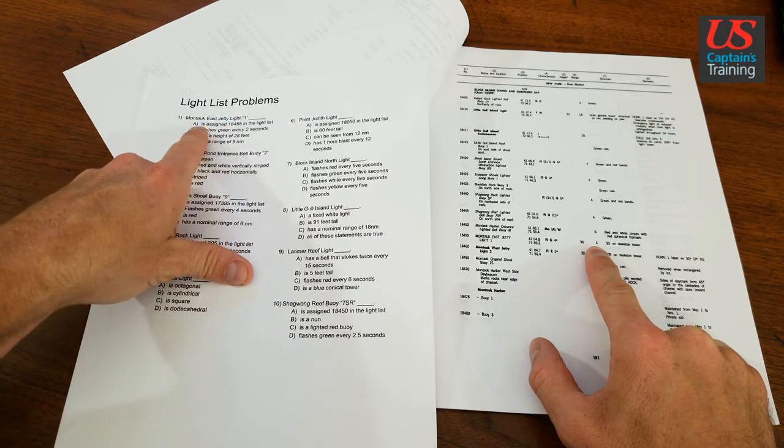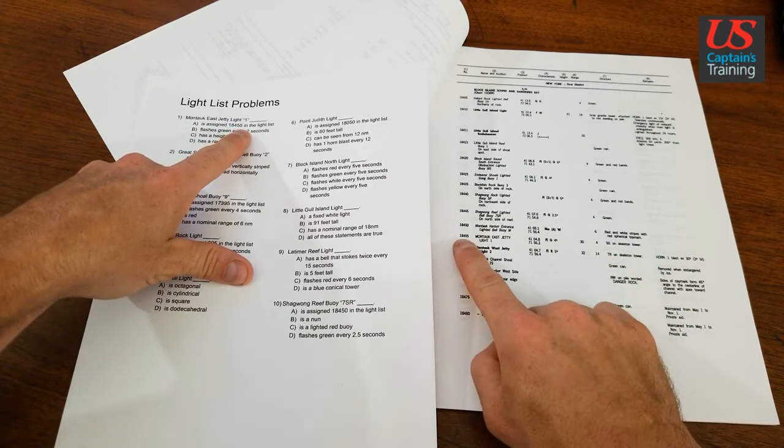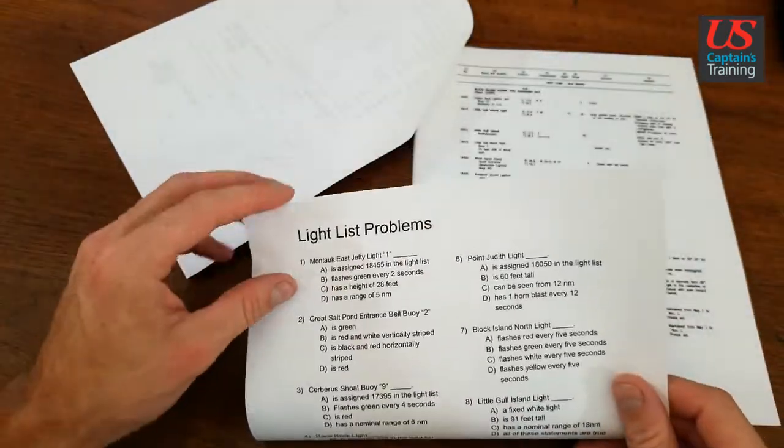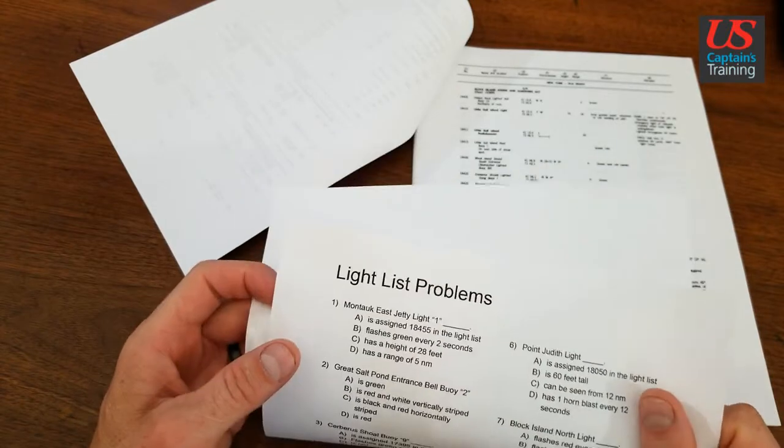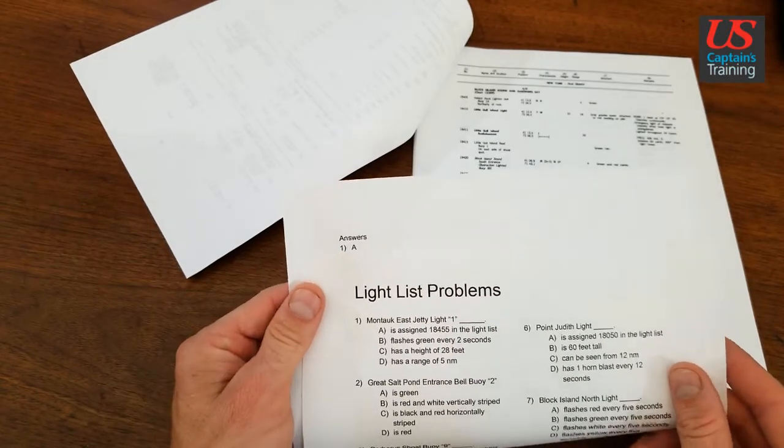So the answer to light list problem one - Montauk East Jetty Light One is assigned 18455 in the light list, as we can see here. Let's check our answers. Question one is A.